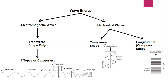Mechanical waves require a medium. The energy needs to get from one place to another by disturbing the molecules in a medium. When the molecules in the medium are disturbed, they can take the shape of a transverse wave or a longitudinal wave, also known as a compressional wave. We talked about what makes a transverse wave take this shape with crests and troughs — it's because the molecules are disturbed perpendicular to the flow of energy.